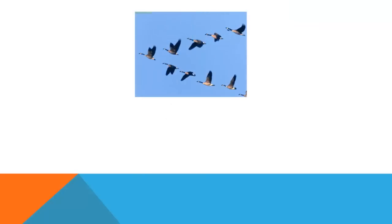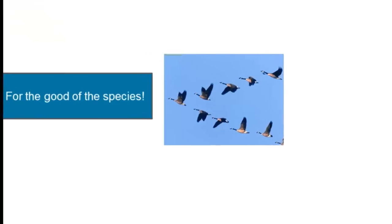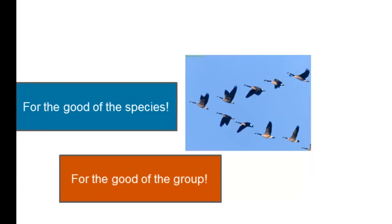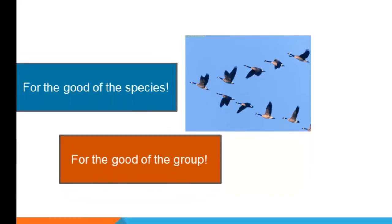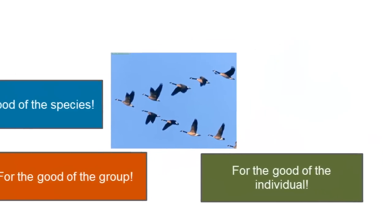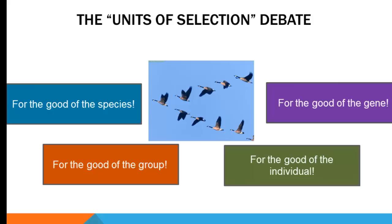We've all seen geese flying in formation, and that's a coordinated and presumably social behavior. The question we're asking is, what was the unit of selection in shaping that behavior? Was it because flying in formation is for the good of the species, or the good of the group? Each flock benefits as a whole from flying in formation. Is it for the good of the individual, or could we reduce it down to a gene that's been selected for? This is called the units of selection debate, and as we'll see, it's a very contentious subject.